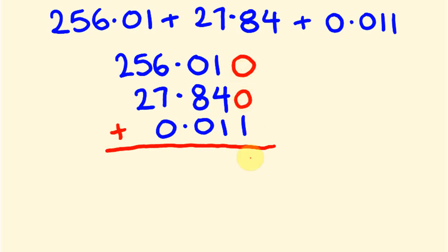So let's do this: zero plus zero plus one is one. One plus four plus one is six. Zero plus eight plus zero is eight. Put the decimal place there. Six plus seven is 13—I put the three there, carry the one. One plus five is six, plus two is eight. And then finally the two from the 200 goes there. So our answer is 283.861.